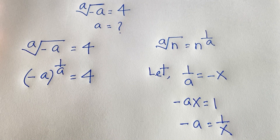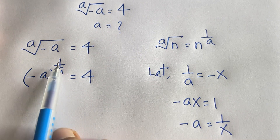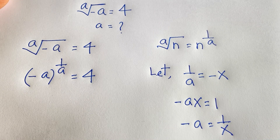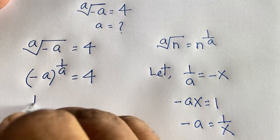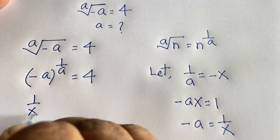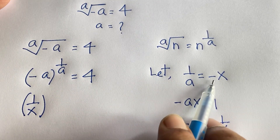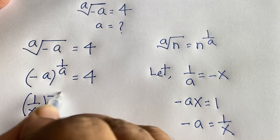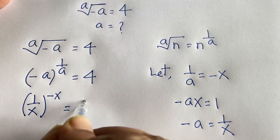So in minus a whole to the power 1 over a, we substitute minus a with 1 over x, and the exponent 1 over a becomes minus x. This gives us 1 over x, whole to the power minus x, is equal to 4.